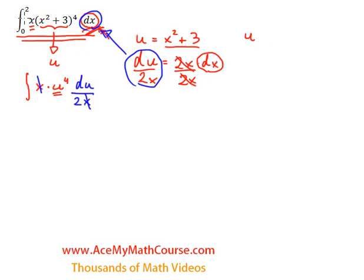So the first limit was the 0, and when x is 0, u is equal to 0 squared plus 3, which is 3, so I need to put a 3 here. And for the second one which is 2, we need to plug in a 2 for x: 2 squared plus 3, 4 plus 3 is 7. Look at that. So we need to change the limits once we do integration by substitution for a definite integral every time.